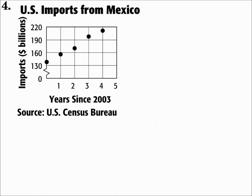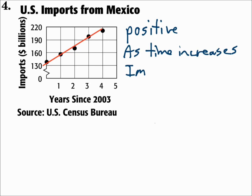Number four: U.S. imports from Mexico. This compares imports in billions of dollars with years since 2003. Looking at the points and the line that would go through them, it goes upward from left to right — that's a positive correlation. As time increases, imports increase. Remember: if x increases as y increases, it's a positive correlation; and if x increases as y decreases, it's a negative correlation.